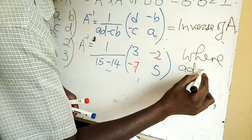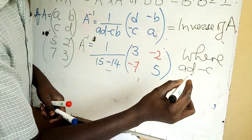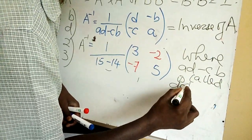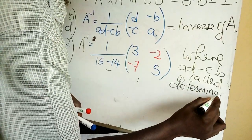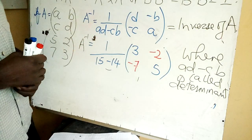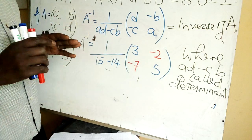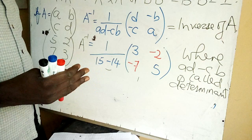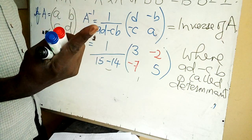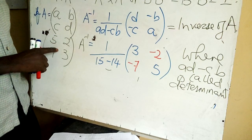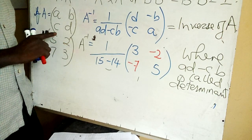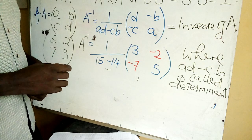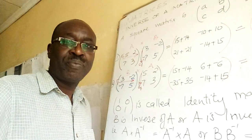The expression ad minus cb is called the determinant. So I can ask: what is the determinant of this matrix? You tell me - it is 15 minus 14, which equals 1. The determinant is ad minus cb, and it is also made use of in area scale factor, but we shall do that later.